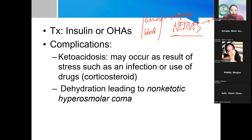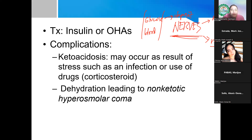When sugar deposits occur on nerves in the eye, it leads to retinopathy. The nerves in the retina are damaged, and some diabetic patients go blind. These are additional complications of diabetes, aside from hypertension, cardiovascular disease, and kidney failure.